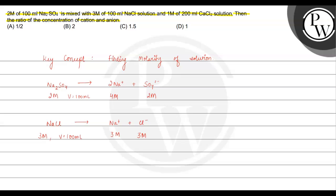The next solution is calcium chloride. Calcium chloride dissociates into 1 Ca²⁺ positive ion and 2 Cl⁻ chloride ions. The molarity is 1 molar and the volume is 200 ml.